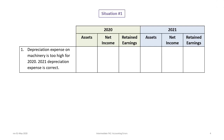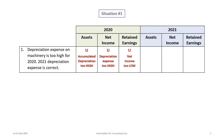Our first situation: the depreciation expense on machinery is too high for 2020, and the 2021 depreciation expense is correct. For 2020, the assets are understated — the accumulated depreciation is too high, so net assets are understated. Because the depreciation expense is too high, net income is understated, and therefore retained earnings are too low as well.